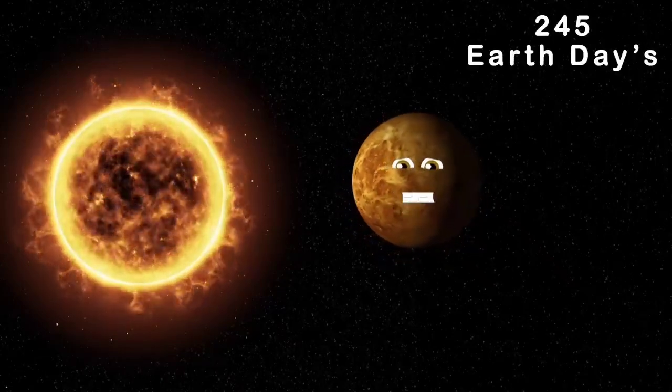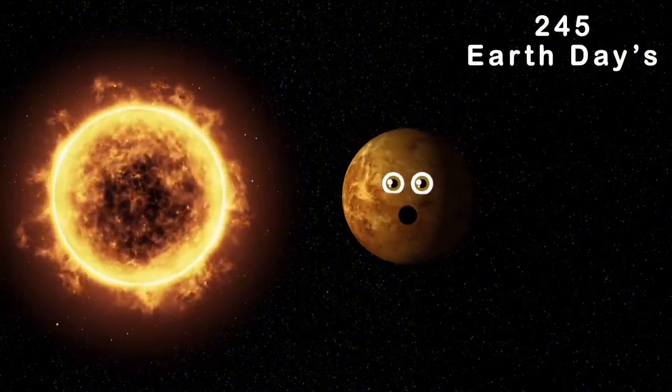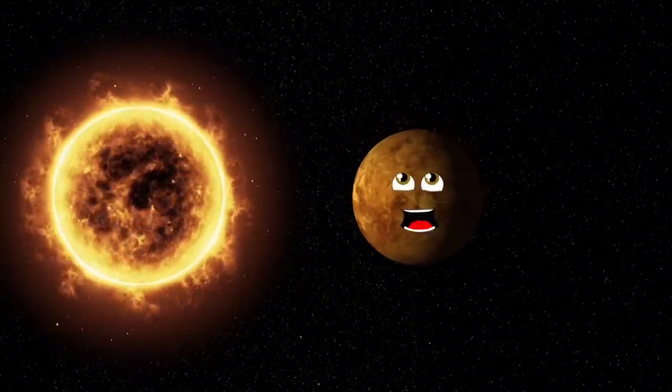245 Earth days is how long it takes for me to orbit the sun. That's one year, make no mistake.